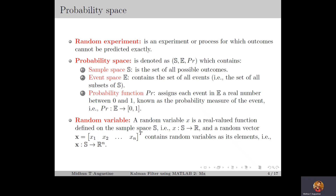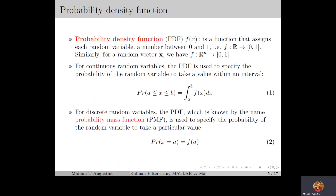In this lecture series, we will be mainly focusing on stochastic linear systems in which the state vector, disturbance vector, noise vector, etc. will be random vectors. Now a probability density function, which we denote by f of x, is a function that assigns each random variable a number between 0 and 1. So basically the PDF f is a mapping from the set R to the closed interval 0 to 1. Similarly for a random vector x, the PDF f is a mapping from Rn to the closed interval 0 to 1, assigning each random vector in Rn a value between 0 and 1.